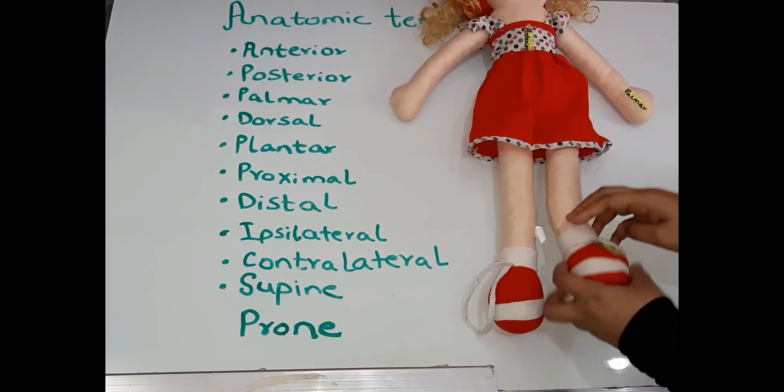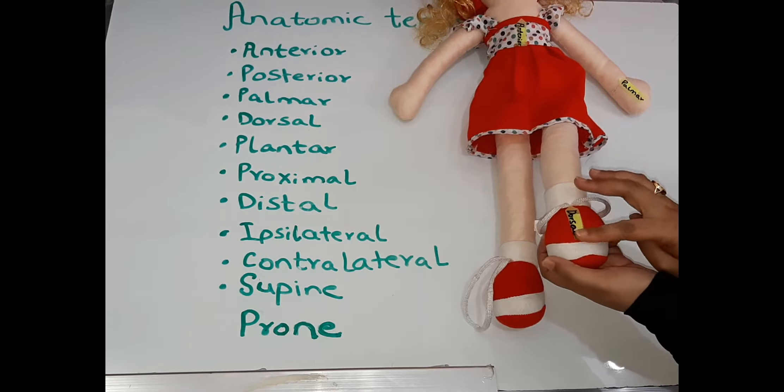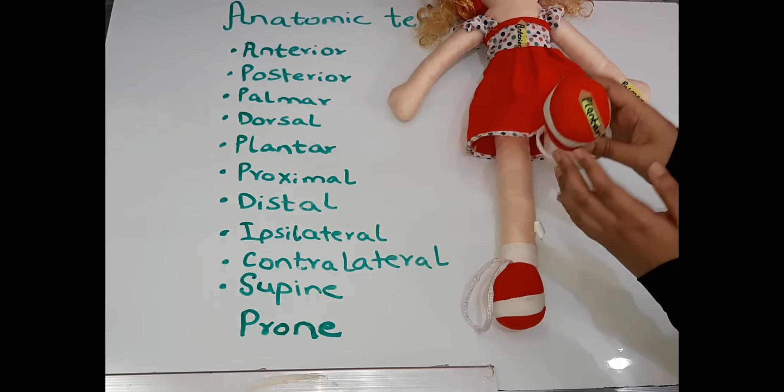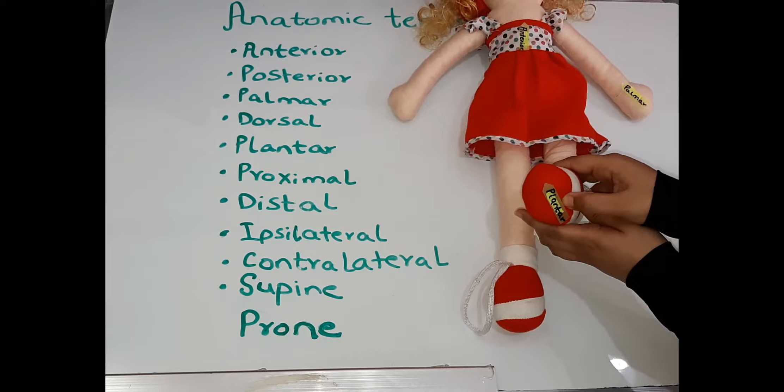For the feet, the top surface of the feet which we can see is the dorsal surface while the bottom of the feet which touches the ground while walking is the plantar surface.